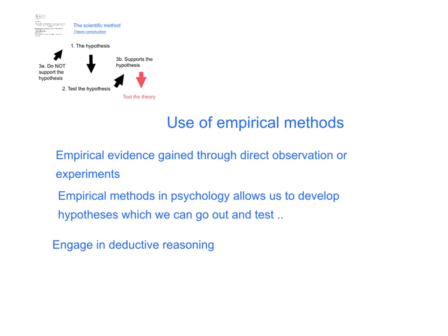The final major feature of science is the use of empirical methods. In psychology, an empirical method is one which permits us to observe or measure some aspect of behaviour and to use our findings, either to develop existing theories or to introduce new ones. This is central to our understanding of science. Empirical evidence can be gained through direct observation or the use of experiments, rather than by reasoned argument or unfounded beliefs.